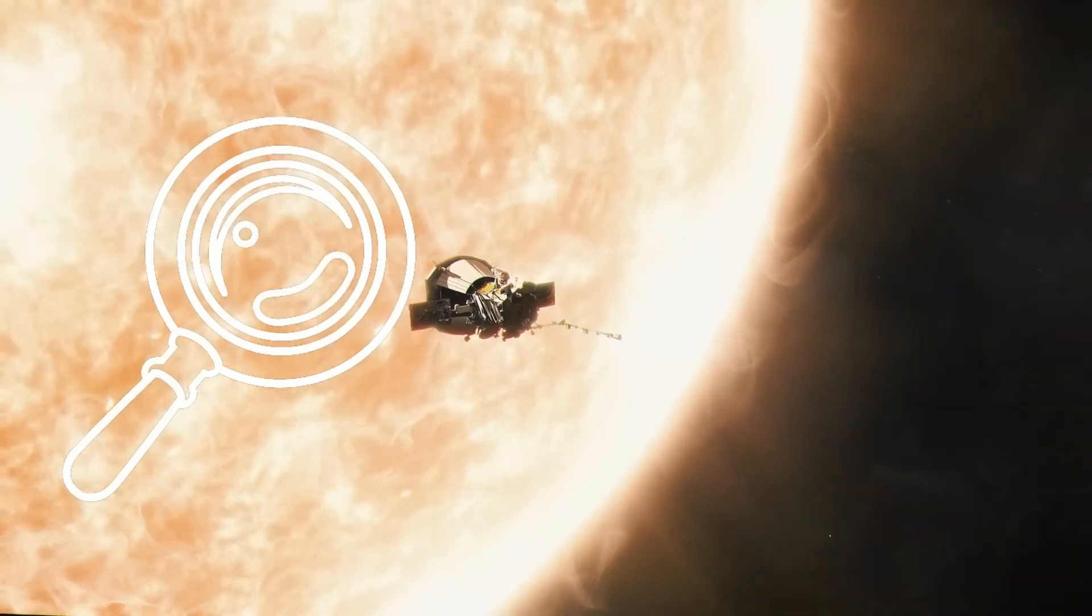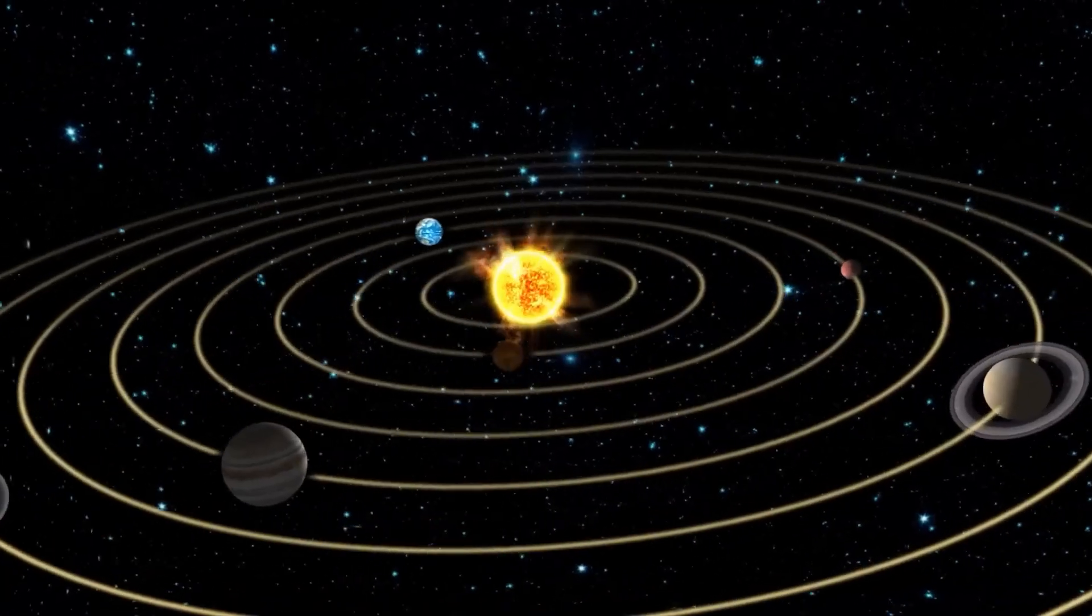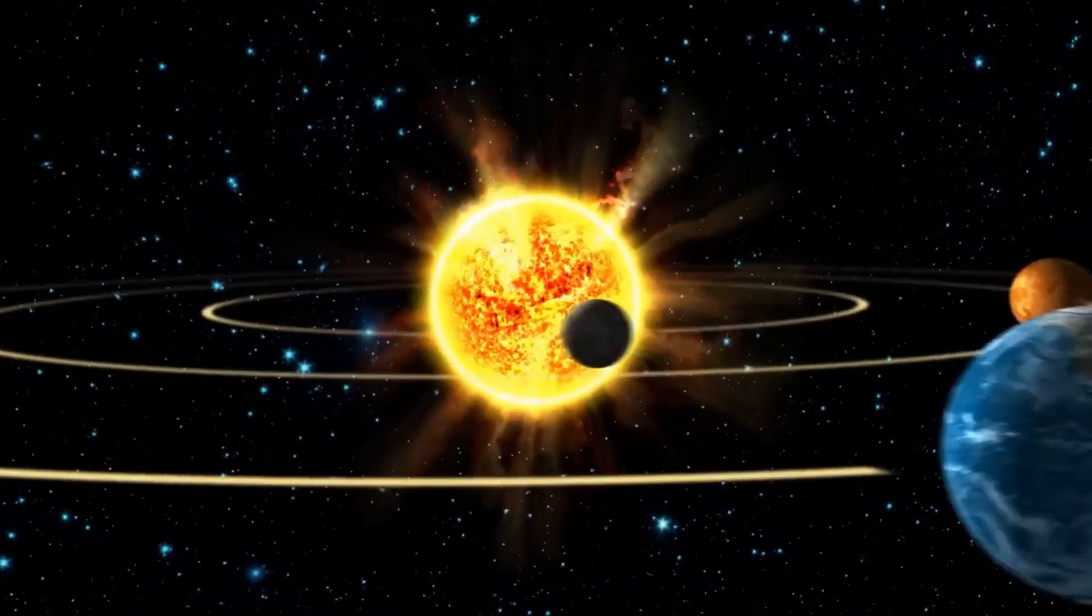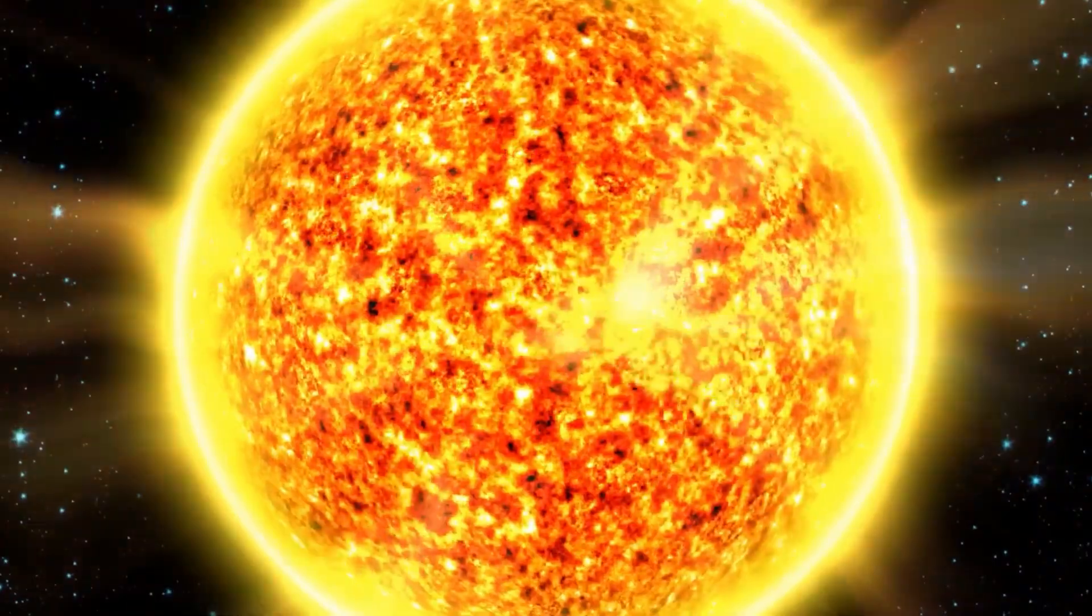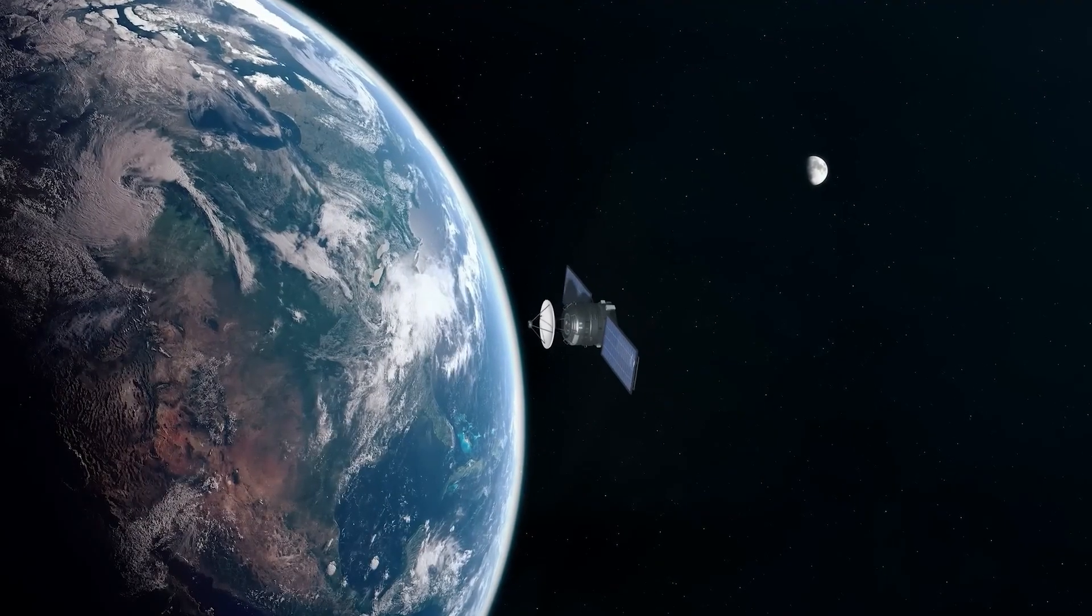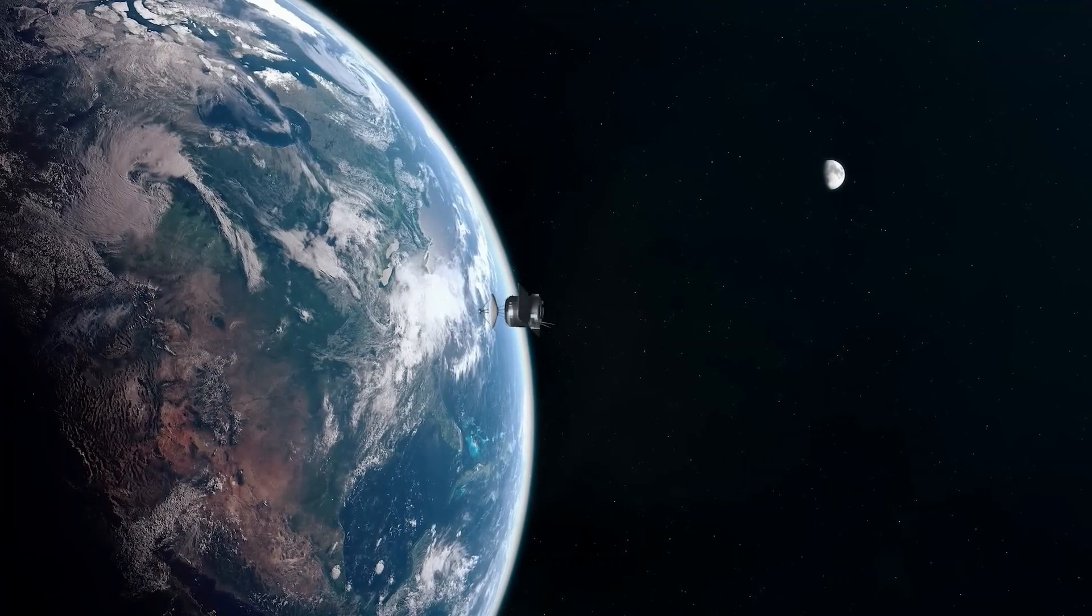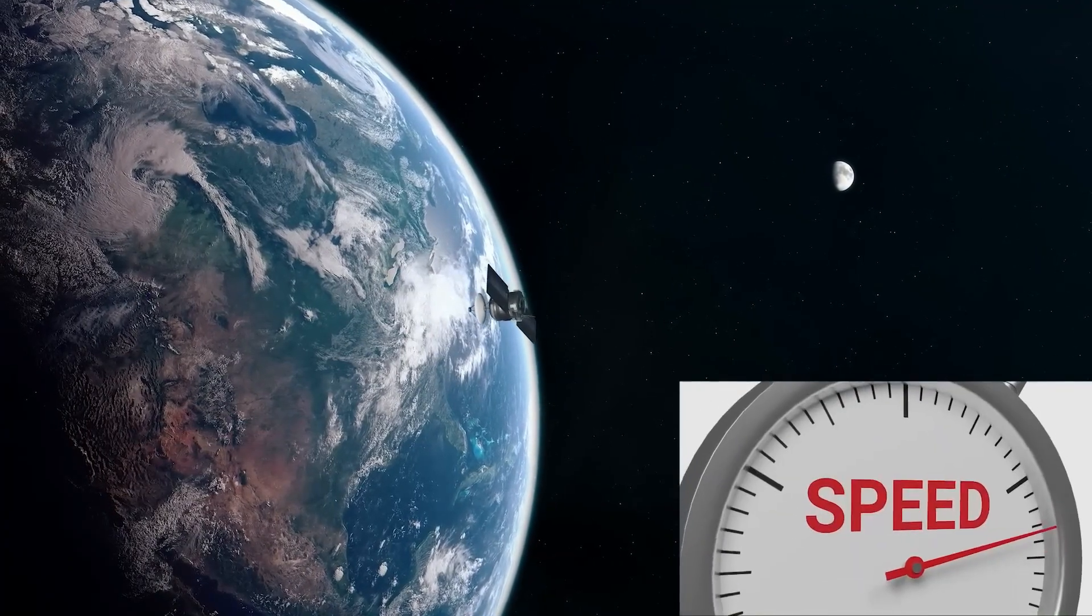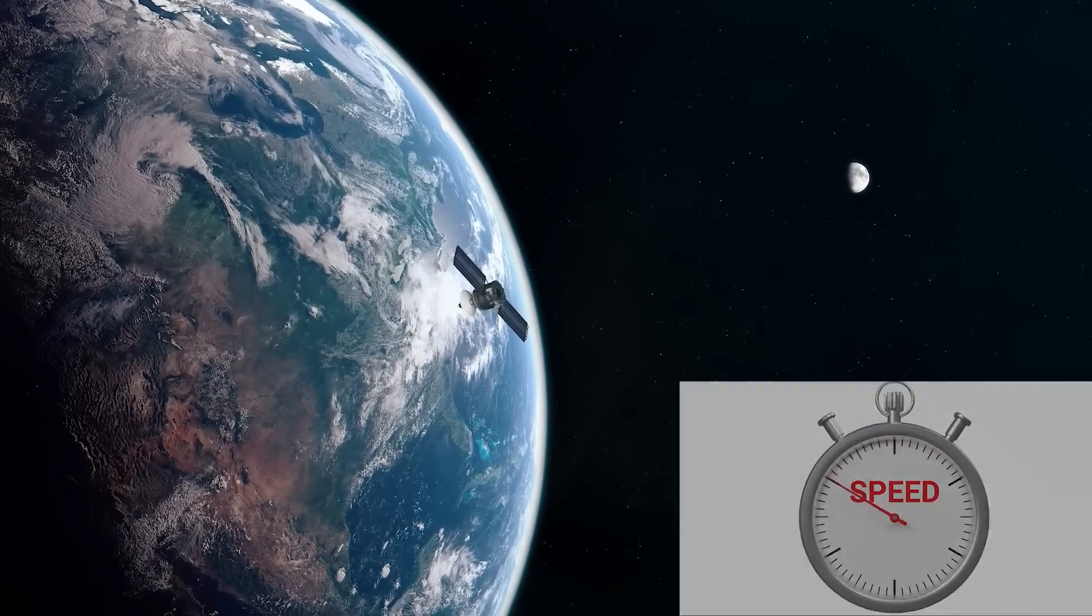The probe had to withstand temperatures of millions of degrees Celsius and observe the solar wind escaping the Sun. Designing and developing the Parker Solar Probe was a challenge in itself, but sending it to the Sun posed an even greater challenge. It's important to understand that getting close to the Sun, which holds the planets of our solar system in its gravitational bonds, is incredibly difficult.